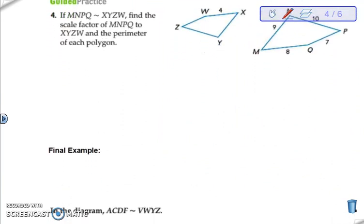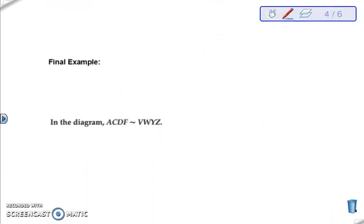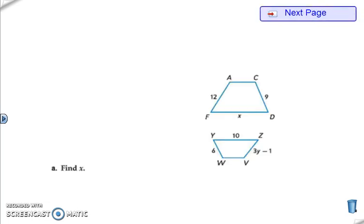Look at your guided practice. Set it up the same way. We are going to look at our final example now. So we are given a similarity statement: ACDF is similar to VWYZ. Here's our two figures and we are asked to find some missing variables.